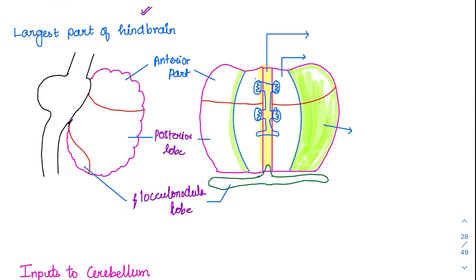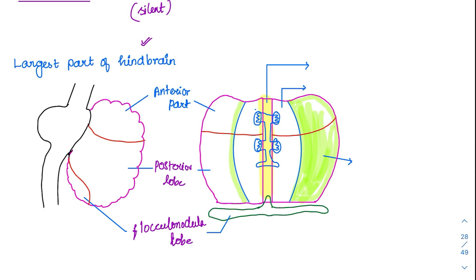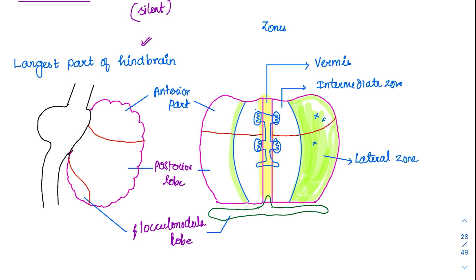Physiologically, there is another important division called zones. They are divided primarily into three different zones. The central portion is called the vermis. Then immediately next to the vermis is a region called the intermediate zone. Then the green shaded area here is called the lateral zone, because it is situated laterally. So these are the three different functional zones, and we are going to discuss the cerebellum with respect to these three different zones.